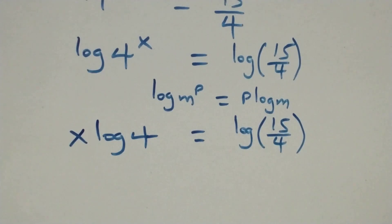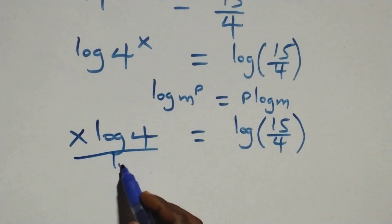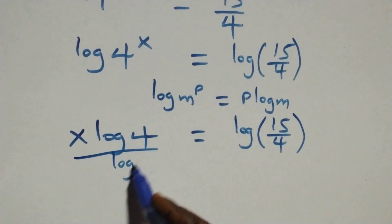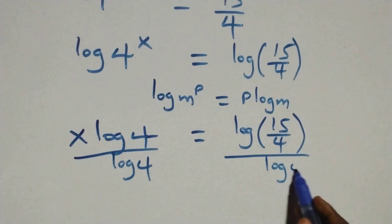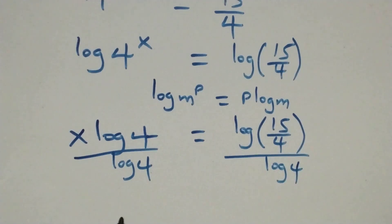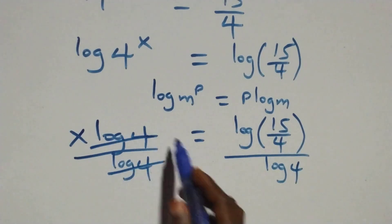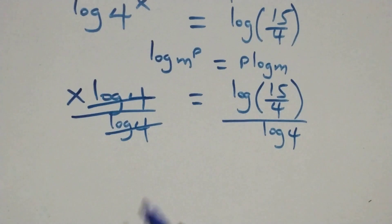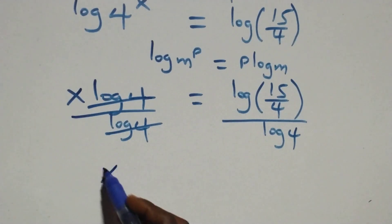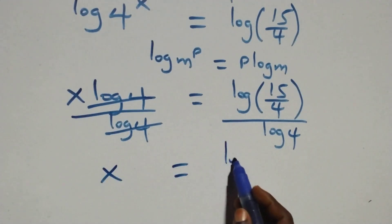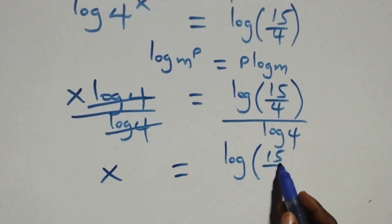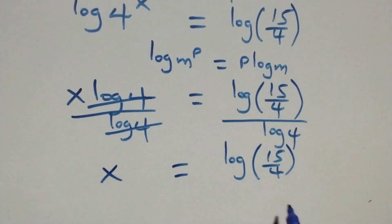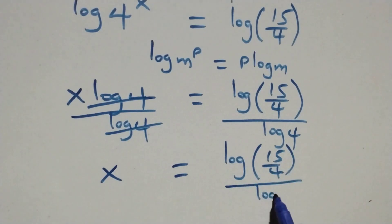We divide both sides by log 4. The log 4 terms cancel each other, and we have x equals log(15/4) divided by log 4.